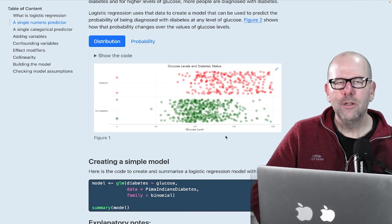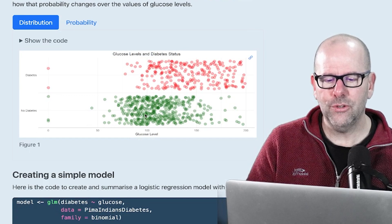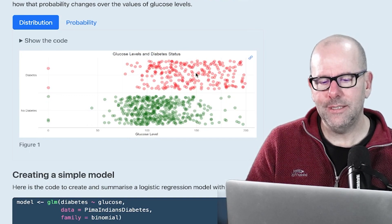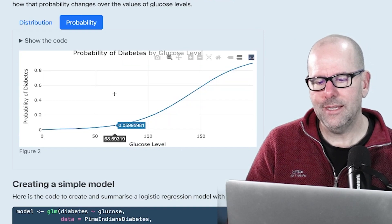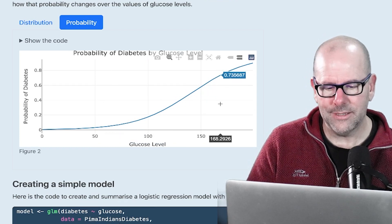We started off with just a model, a simple model, where we just had one variable, glucose. So as glucose goes up, the chances of you getting diabetes goes up. And here is our probability distribution. And incidentally, this is the model.